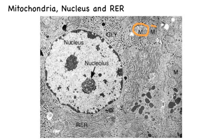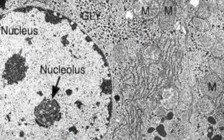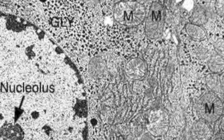Here I'm distinguishing between the mitochondria, which I'm circling in orange labelled with an M, the rough endoplasmic reticulum RER also in orange, and I'm circling the nucleus in red. Zooming in, it is once again possible to identify the mitochondria by the lines on the inside formed by the inner membrane.